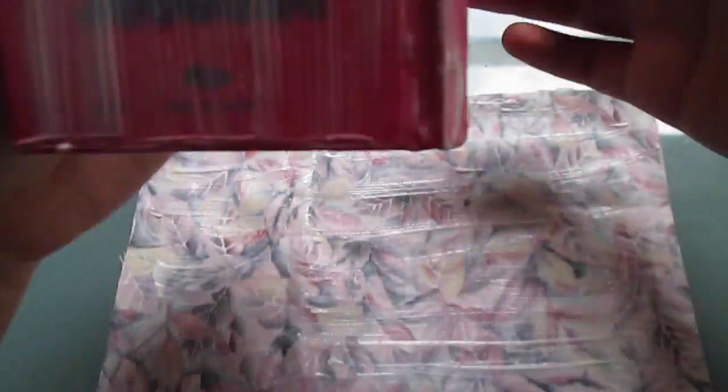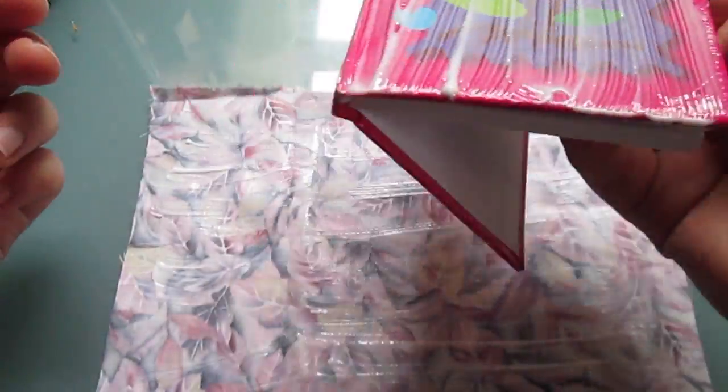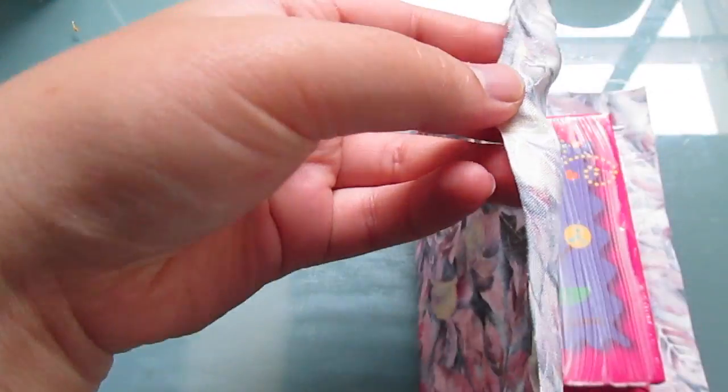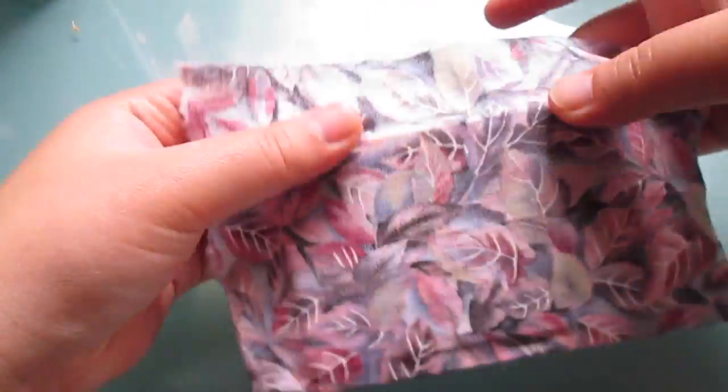Once you've got a whole lot of Mod Podge everywhere, grab your notebook and place it on the right hand side of your fabric like so, and stretch the fabric over the covers.